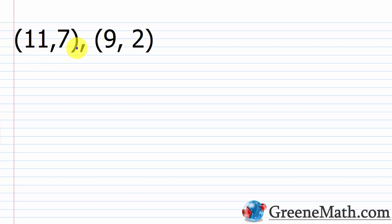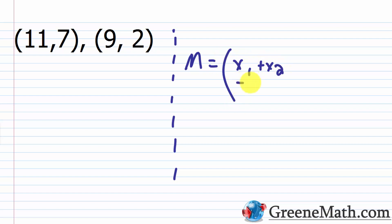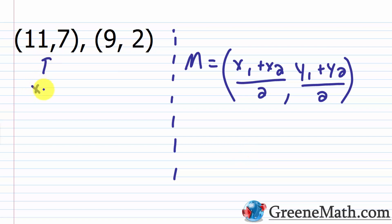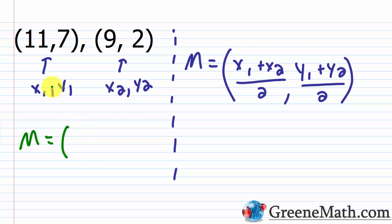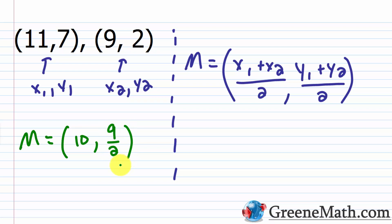One more example: 11 comma seven and nine comma two. M equals X sub one plus X sub two over two, comma, Y sub one plus Y sub two over two. Label 11 comma seven as X sub one, Y sub one and nine comma two as X sub two, Y sub two. For X: 11 plus nine is 20, over two is 10. For Y: seven plus two is nine, over two is nine halves, or 4.5. The midpoint is 10 comma nine halves.